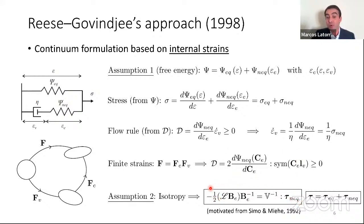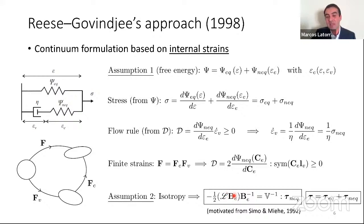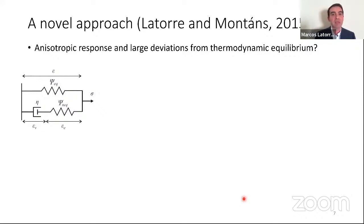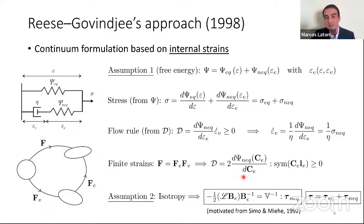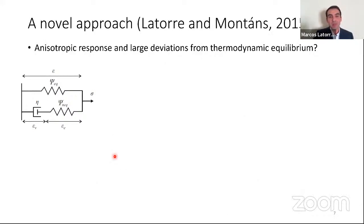By restricting the formulation to isotropy, the left Cauchy-Green tensor b_e and the Kirchhoff stress tensor commute, this equation is simplified, and one can postulate this evolution equation for the elastic deformation. However, even in the 1992 paper by Simó and Miehe, they already said that this evolution equation was non-conventional. It is non-conventional because it involves the Lie derivative of B_e, which was deemed unconventional. During the second part of my PhD, we wanted a model for viscoelasticity that could capture anisotropic viscoelastic response and was valid for large elastic deviations from thermodynamic equilibrium.